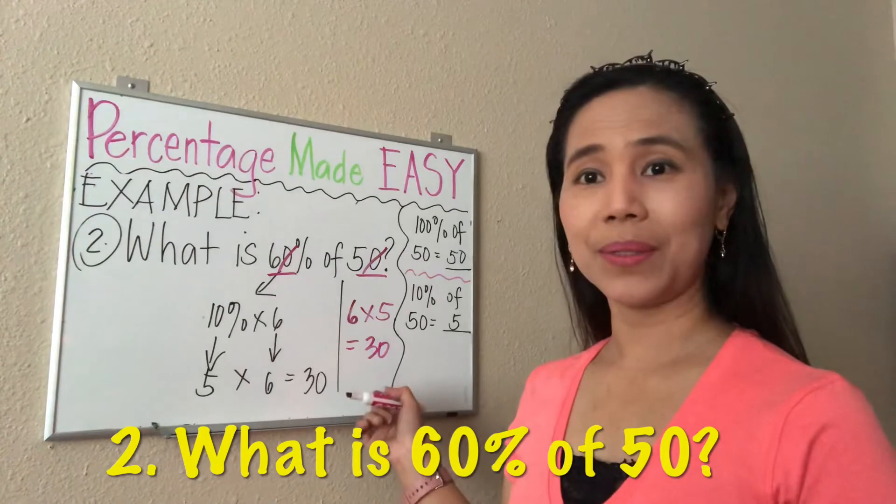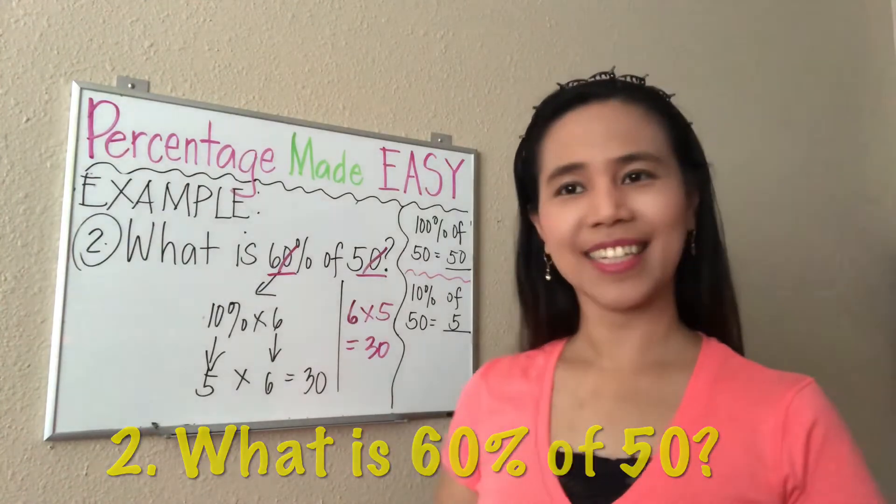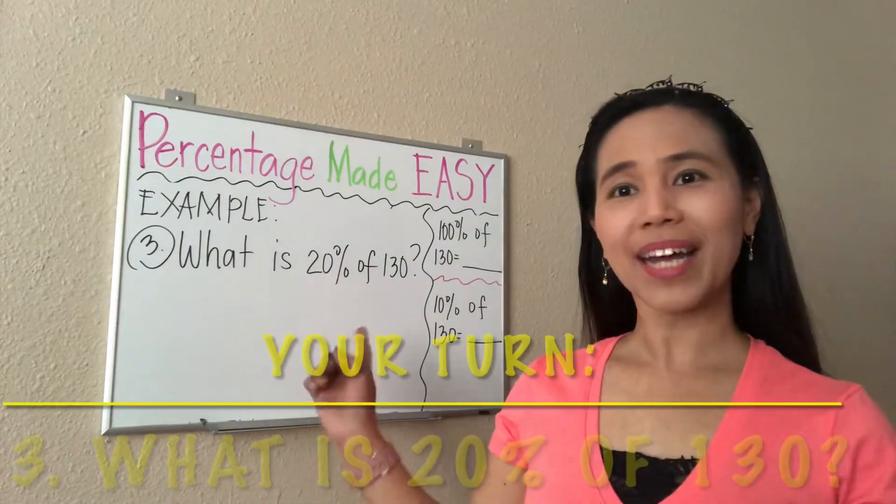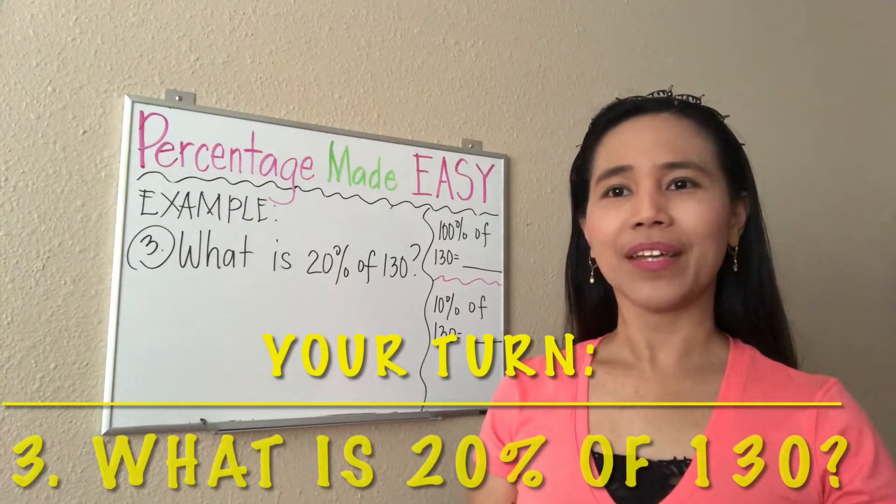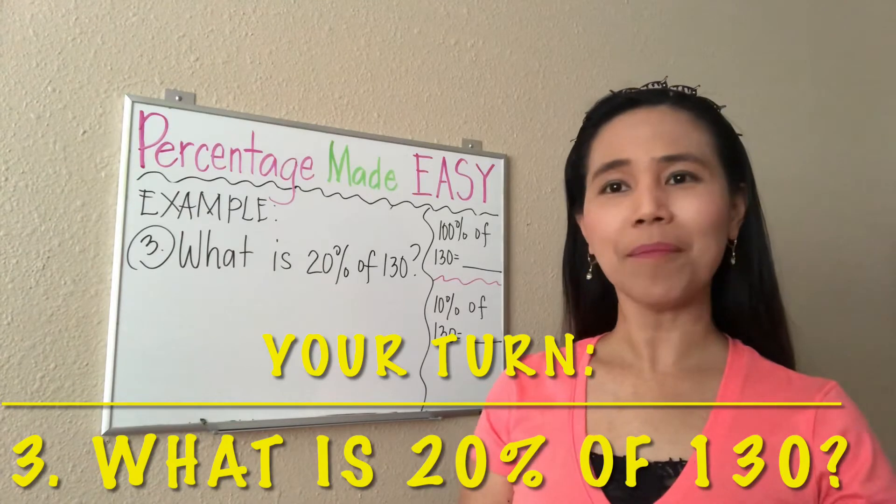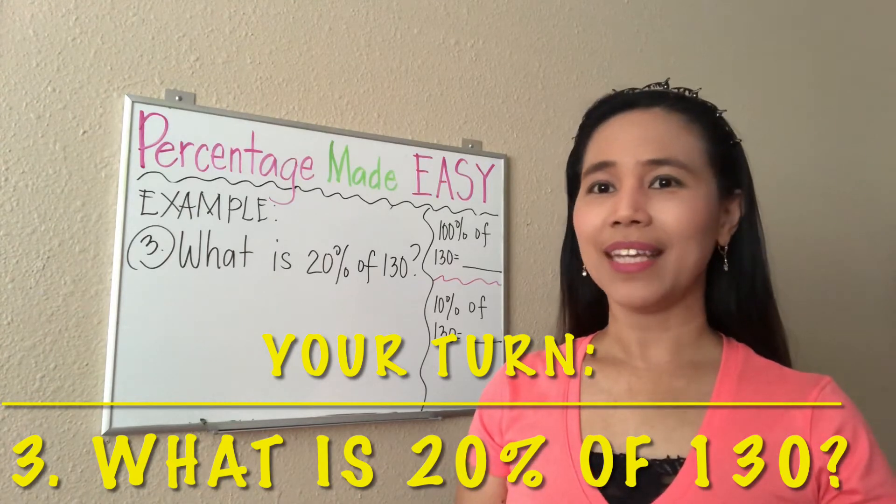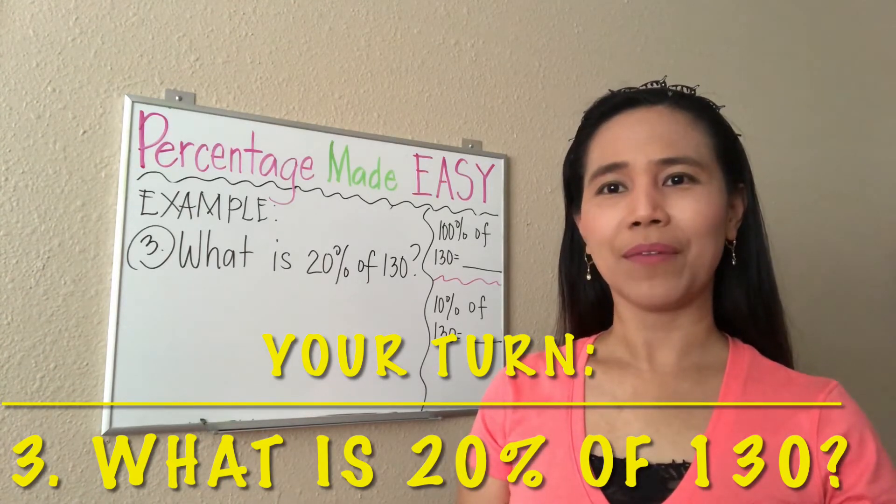Now you try the third example: what is 20% of 130? You can apply the strategies that we have learned in the previous examples. If you are ready, you can start—I'm giving you 10 seconds.